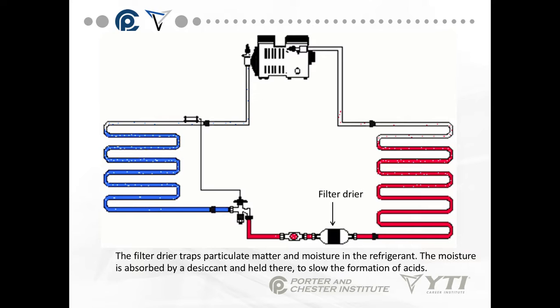Most often before the sight glass, we have a filter dryer. A filter dryer is found in most systems but it's not required. It will trap particulate matter and moisture. The moisture is absorbed by a desiccant and held there to slow the formation of acids. Any time a system is opened to the air and the refrigerant is recovered and replaced, you need to change that filter dryer — it will save your compressor in the long run.